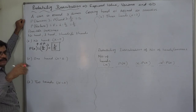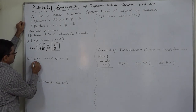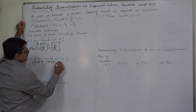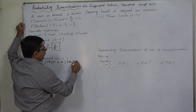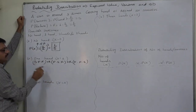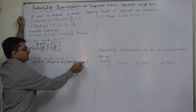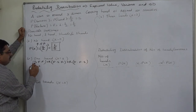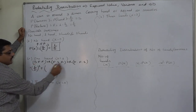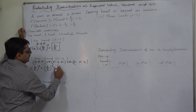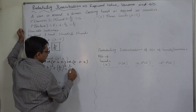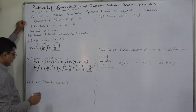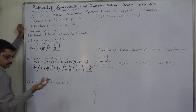One head is possible in three ways: success in the first and failure in the other two; failure in the first, success in the second, failure in the third; or failure in the first two and success in the third. Each has probability (1/2)³ = 1/8, so the total probability is 1/8 + 1/8 + 1/8 = 3/8.